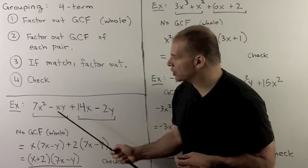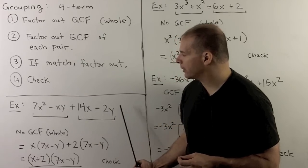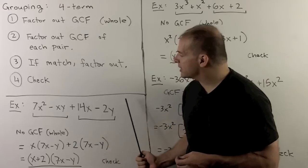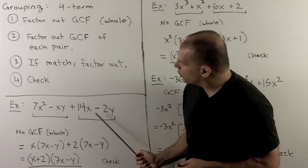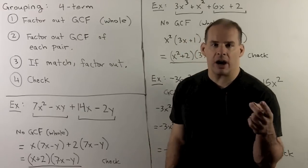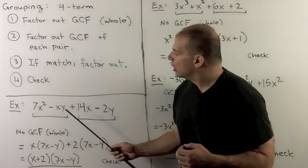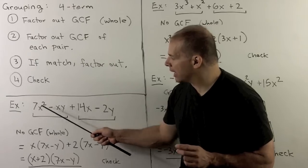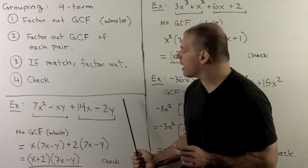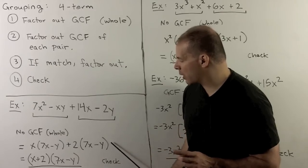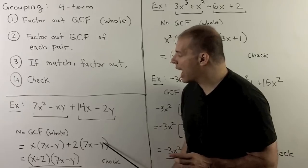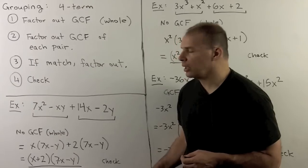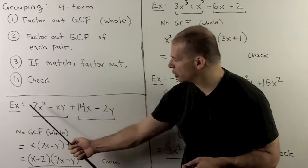Example: 7x² − xy + 14x − 2y. First, check for a GCF: no common number, and the third term has no y while the fourth has no x, so no GCF to pull out. Going to pairs: from the first pair, factor out x, leaving 7x − y. From the second pair, factor out 2, leaving 7x − y. These match, so grouping works. The factorization is (x + 2)(7x − y). I'll leave it to you to check by multiplying.